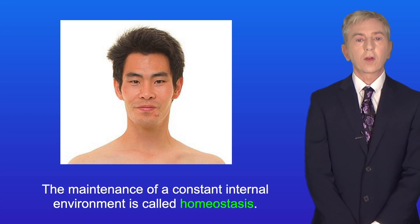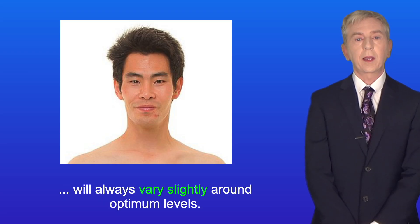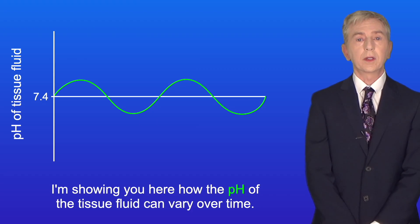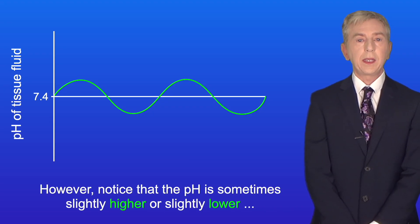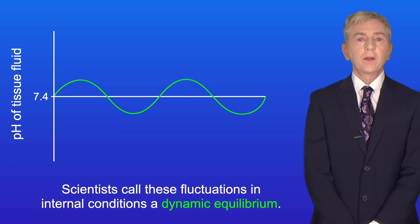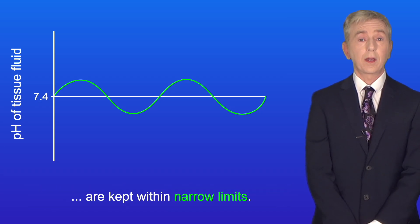Now the maintenance of a constant internal environment is called homeostasis. However, a key idea you need to understand is that internal conditions will always vary slightly around optimum levels. I'm showing you here how the pH of the tissue fluid can vary over time. The normal pH of tissue fluid is around pH 7.4. However, notice that the pH is sometimes slightly higher or slightly lower than the optimum value. Scientists call these fluctuations in internal conditions a dynamic equilibrium, and the purpose of homeostasis is to ensure that these fluctuations in the internal conditions are kept within narrow limits.